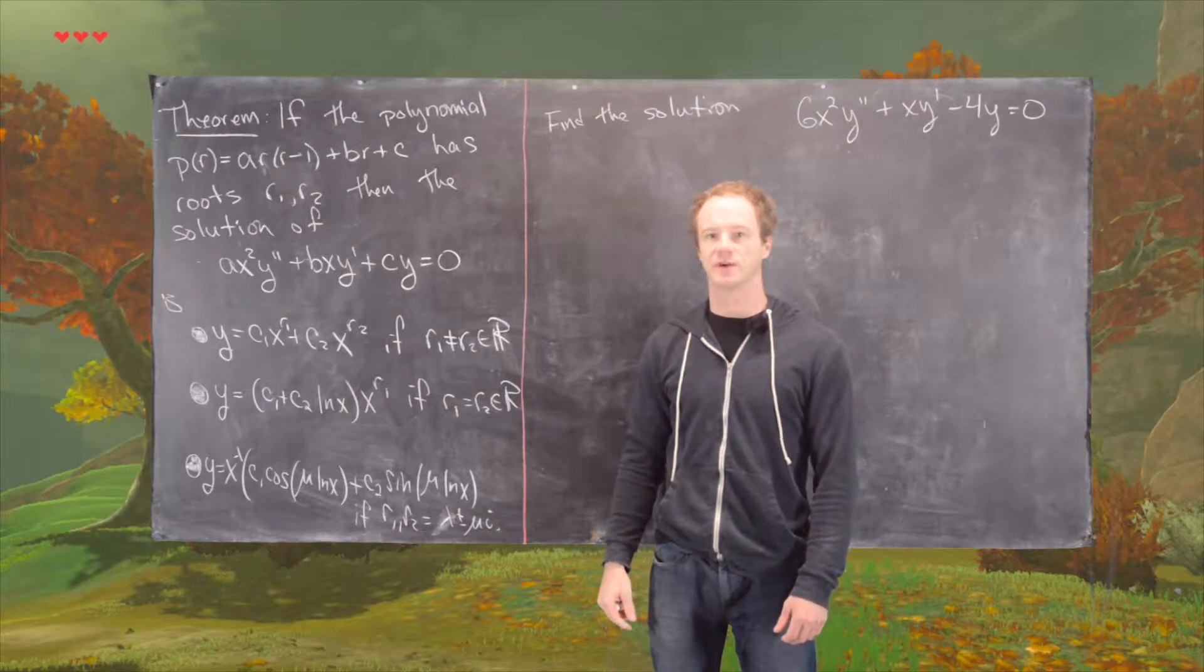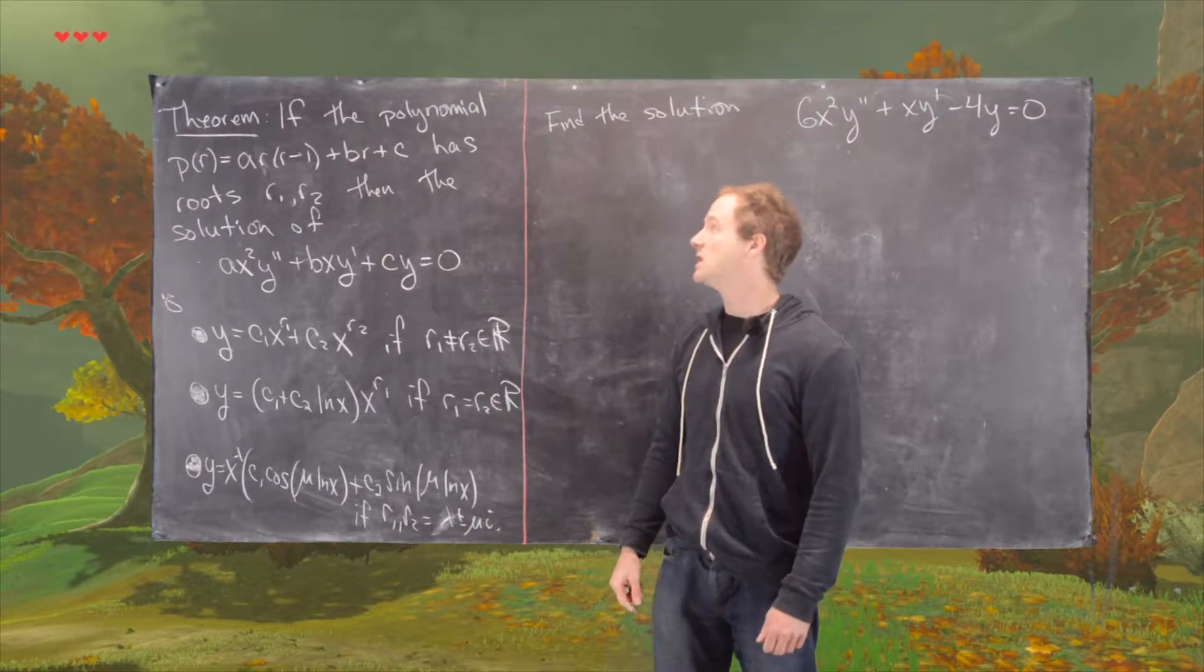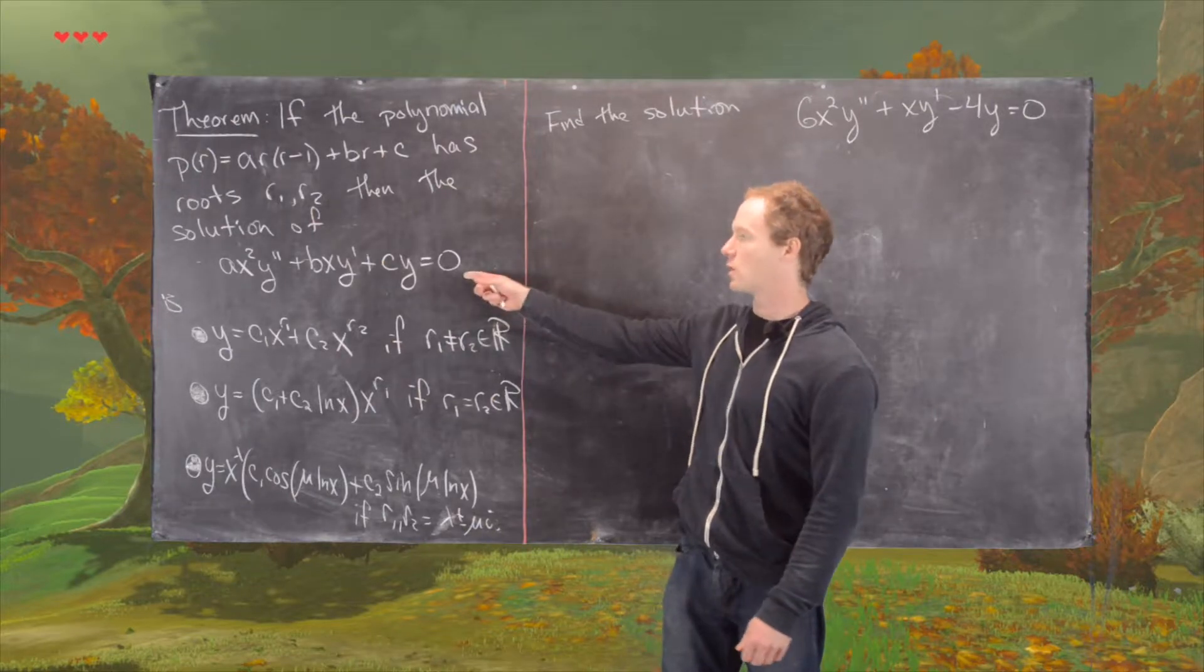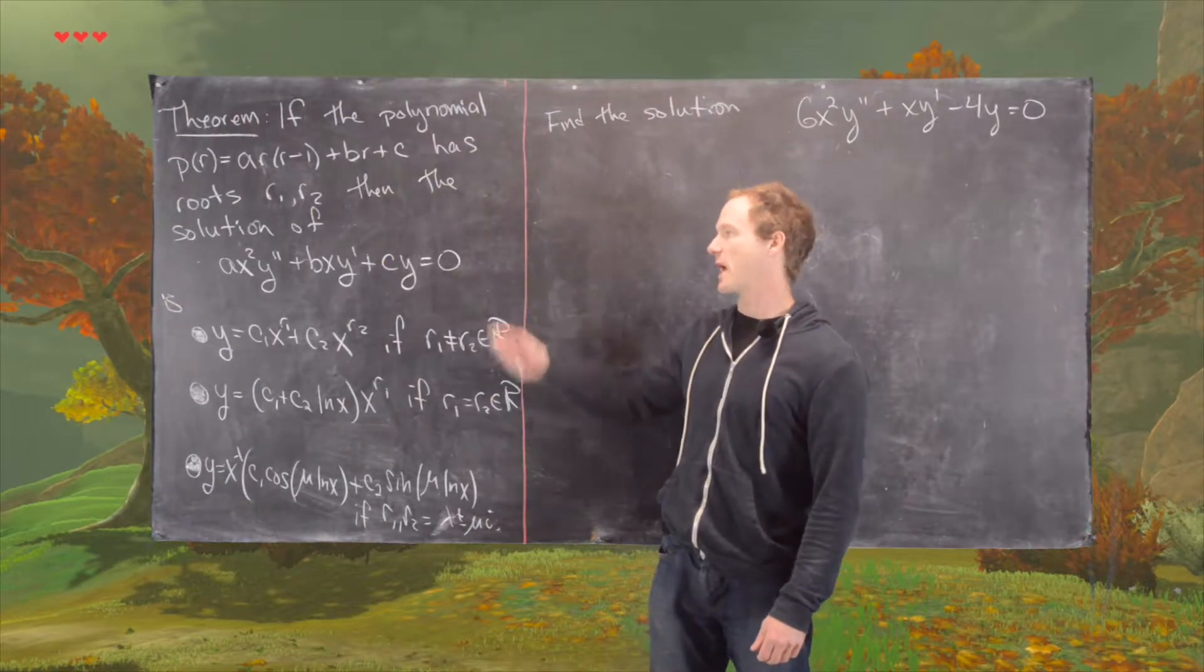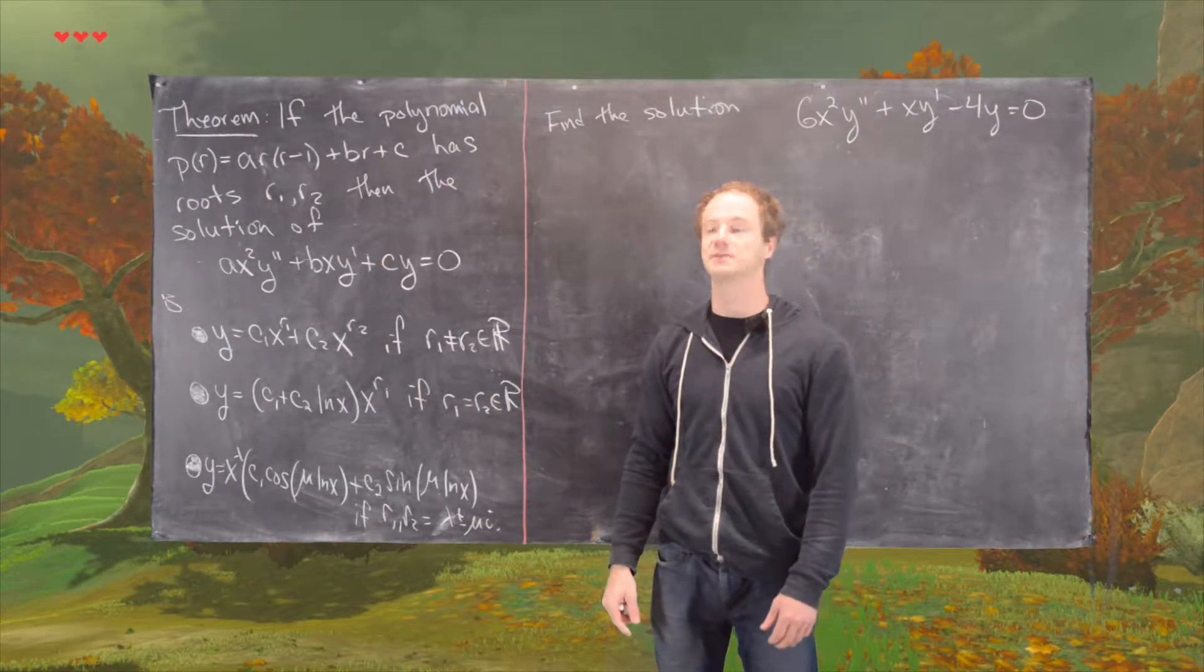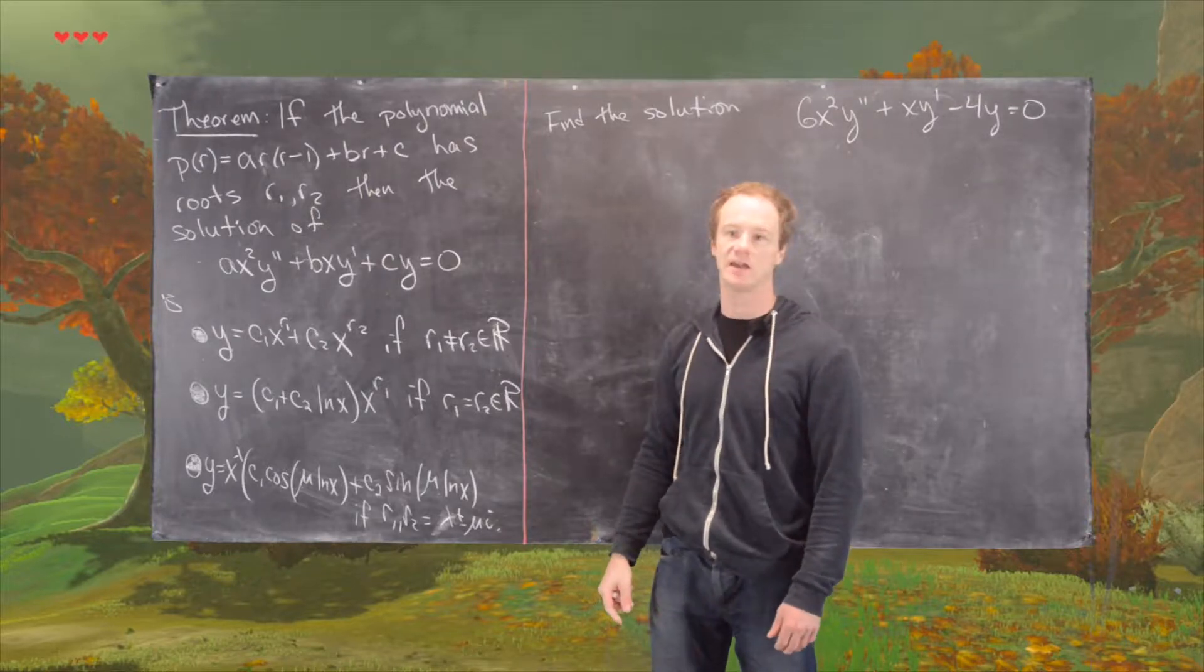In this video we're going to solve a type of differential equation known as an Euler equation. Just as a reminder, an Euler's equation is of the form AX squared Y double prime plus BXY prime plus CY equals zero.